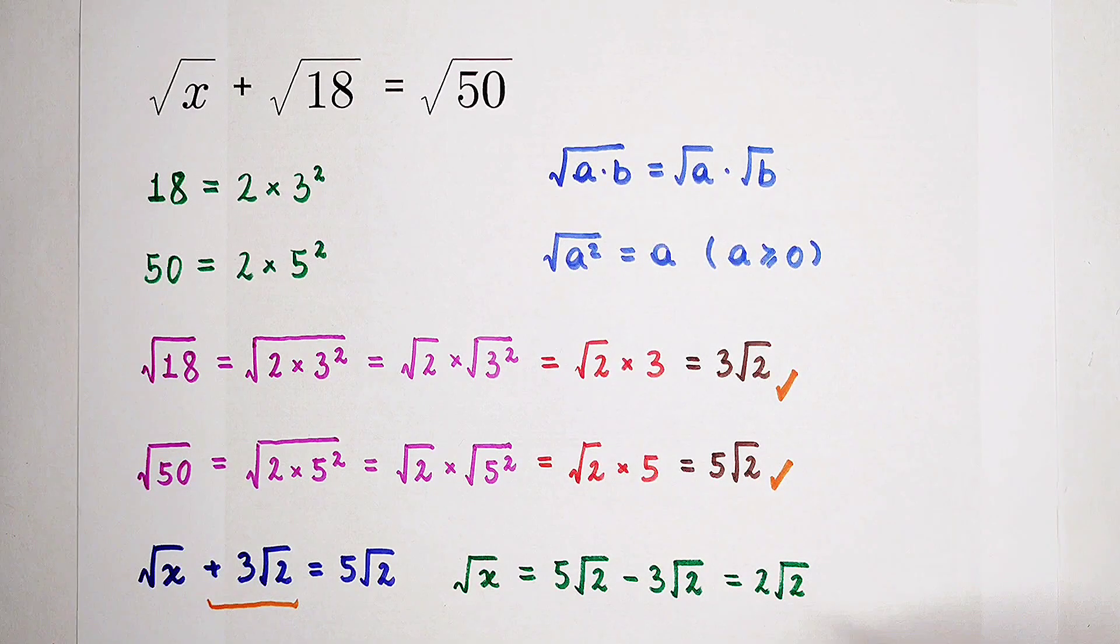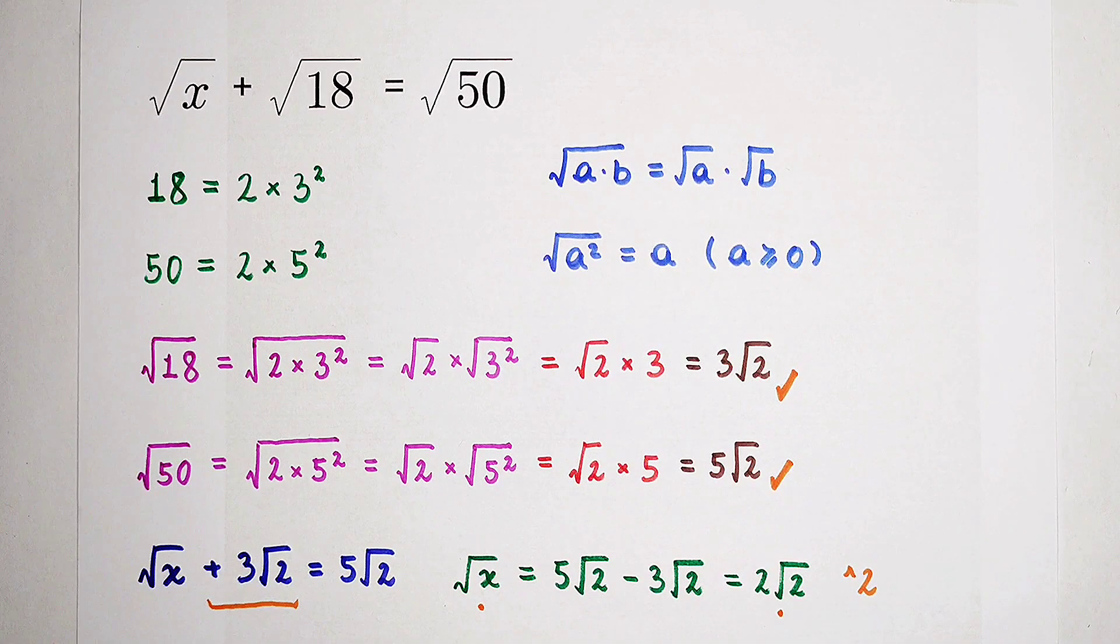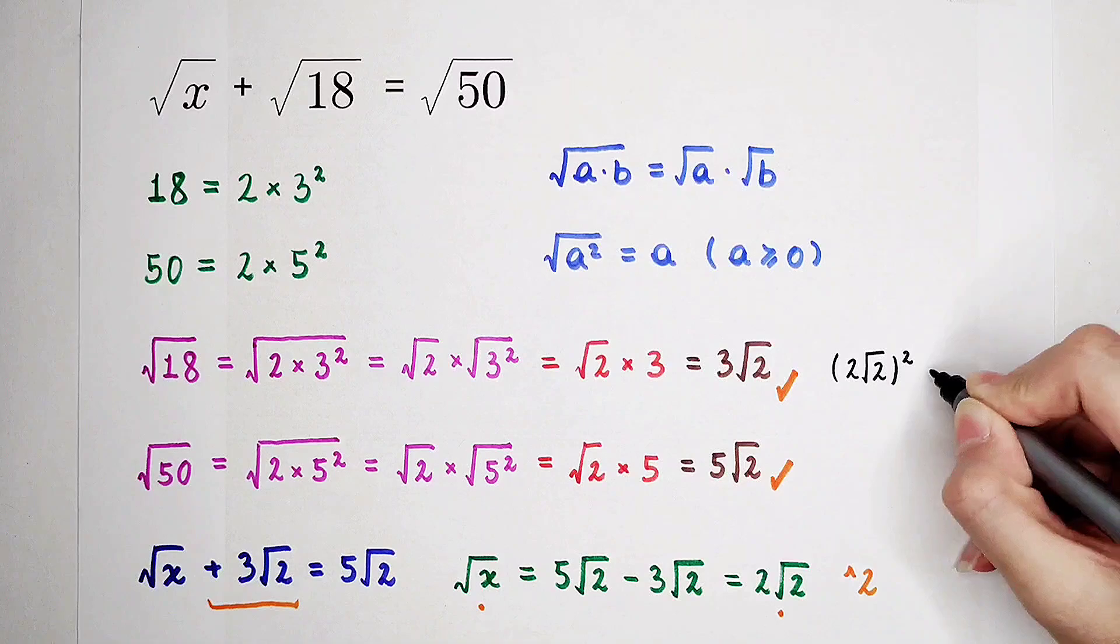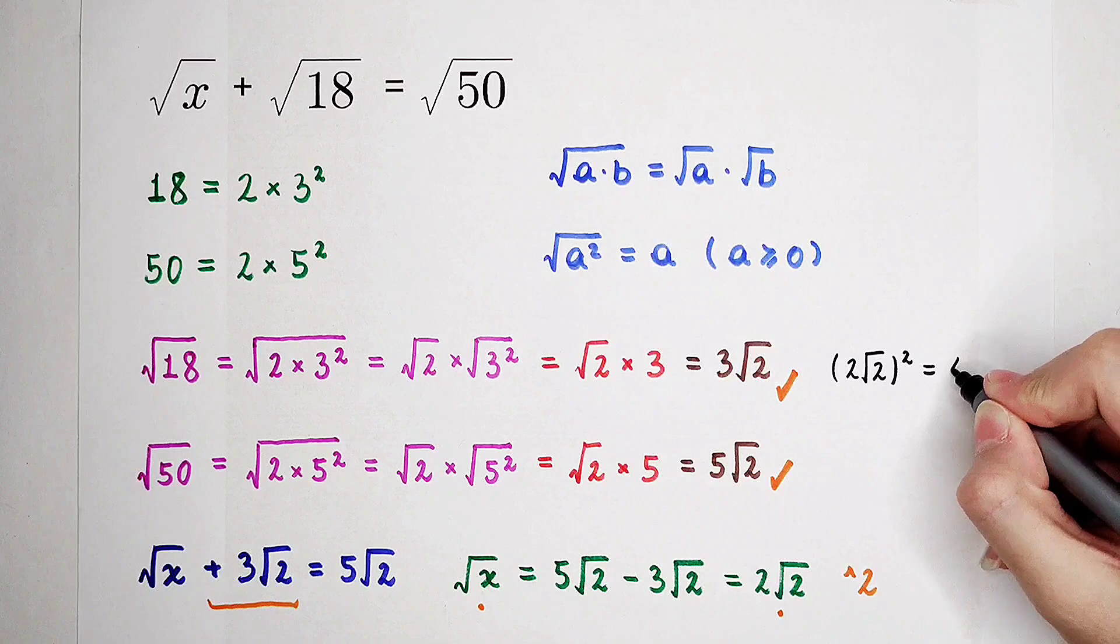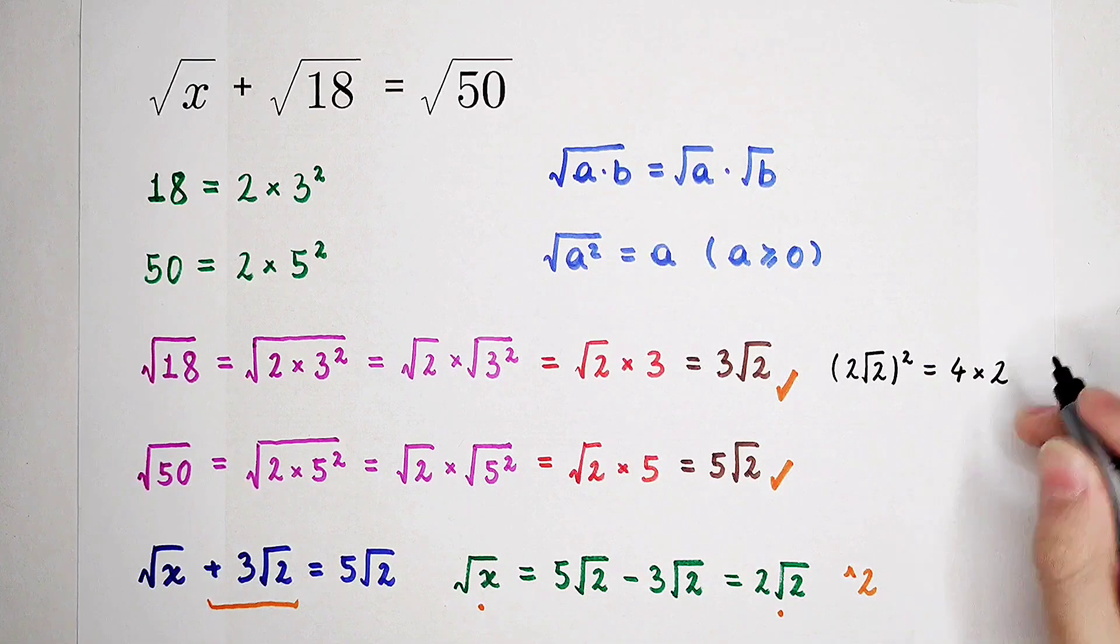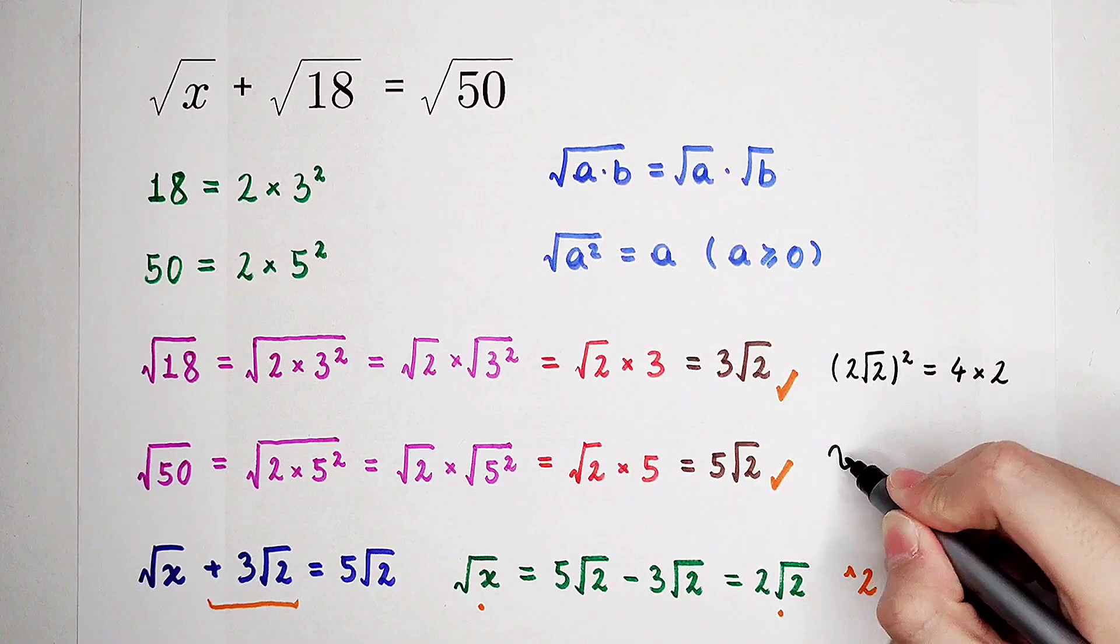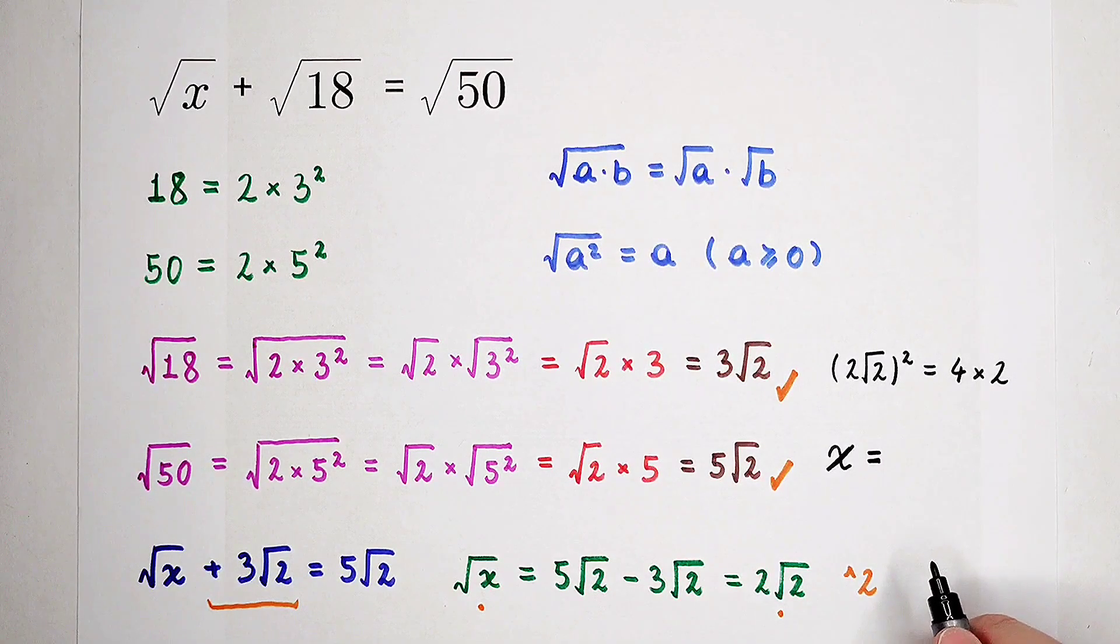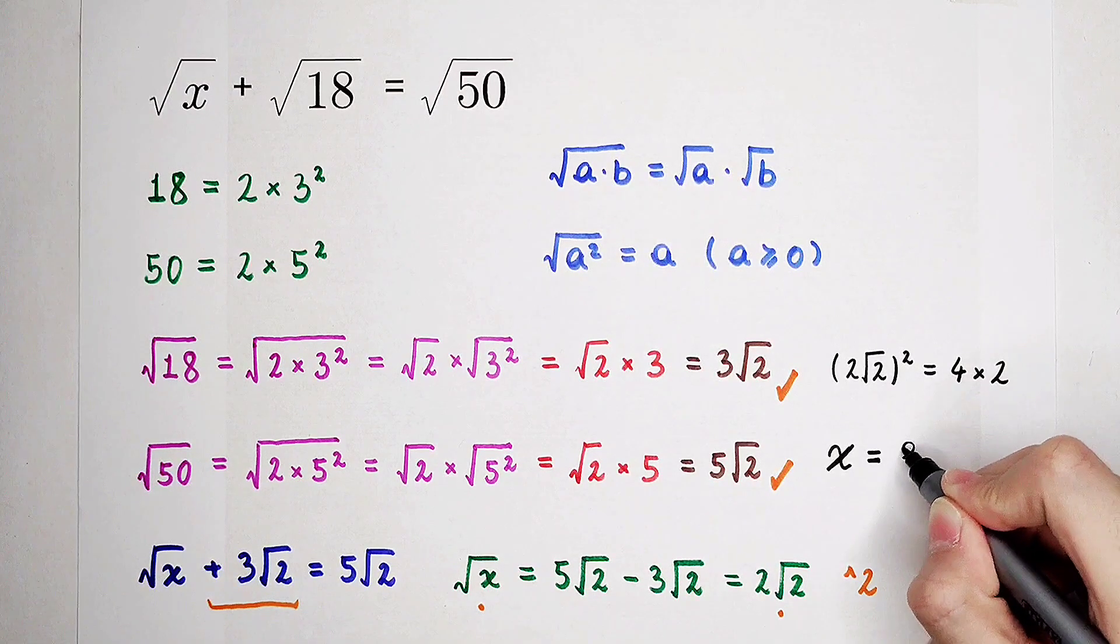And then, square both sides, you can get the answer. 2 root 2 squared is equal to 2 squared is 4. And then, times square root of 2 squared is 2. So it is 4 times 2 is 8. So the final answer, x is, it must be positive since it is under the square root. So x is 2 times 4, 8.